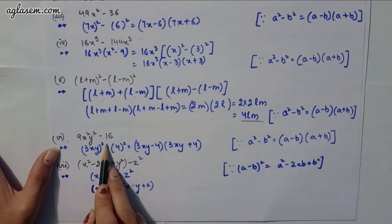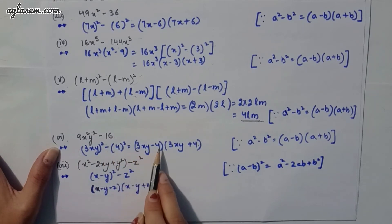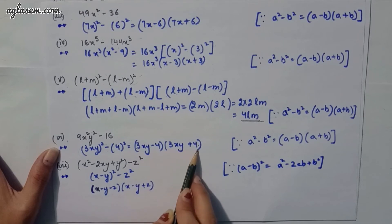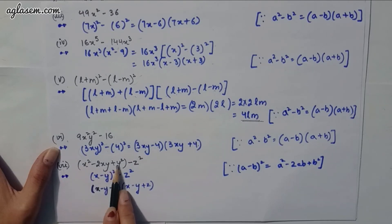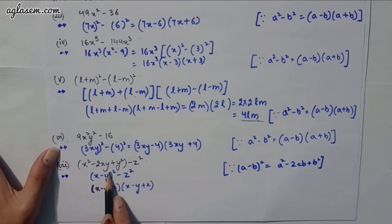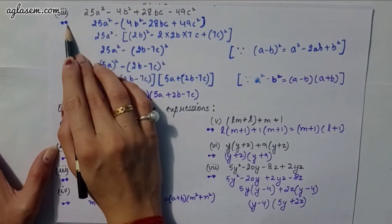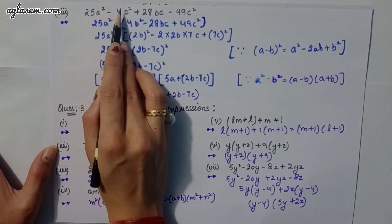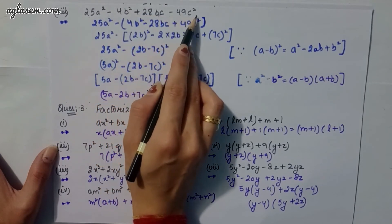Sixth part: 9x²y² − 16 = (3xy)² − 4² = (3xy − 4)(3xy + 4). Seventh part: x² − 2xy + y² − z² = (x − y)² − z² = (x − y − z)(x − y + z).